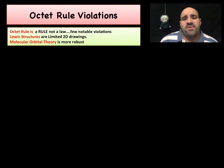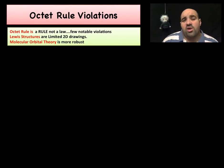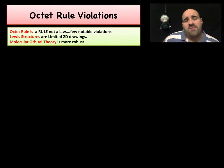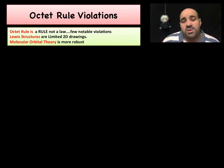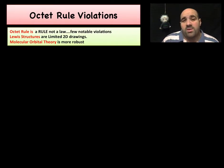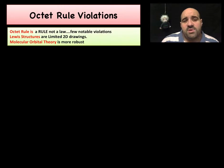There are going to be three cases where the octet rule can be violated. Remember, it's a rule, not a law — there are a few notable exceptions to it. And remember that Lewis structures are really limited to two-dimensional drawings. They're going to be limited in what they can do and what they can tell us, but they are useful, so we still draw them.